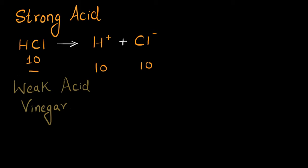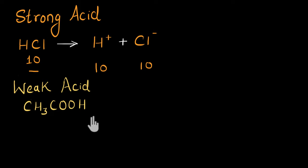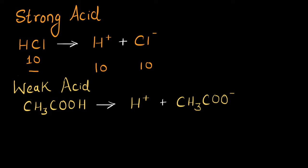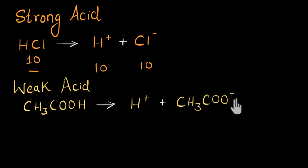Whereas if you take a weak acid like vinegar, its chemical formula is CH3COOH, called acetic acid. This is also an acid, so when mixed in an aqueous solution, it will also dissociate to give us H+ ions — we get H+ and CH3COO−, the acetate ion. But the acetate ion is not very stable in its ionic form; it doesn't want to stay as an ion. It will combine back with H+ and exist as the acid.